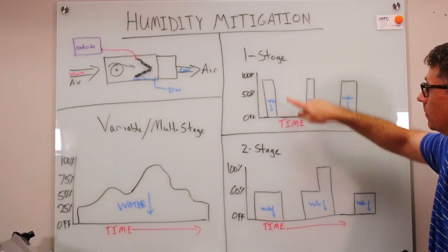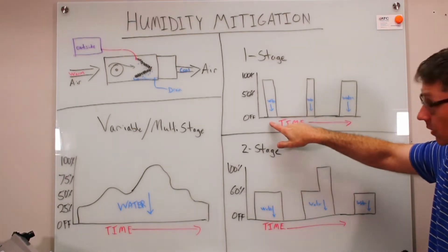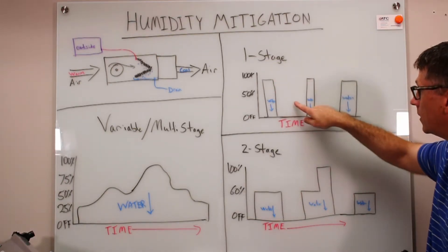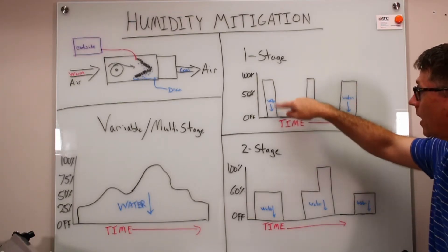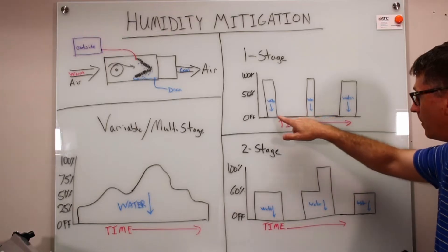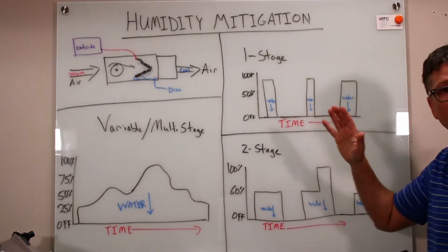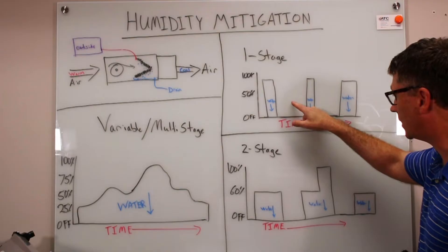Your single stage system, it comes on and it runs at 100% and then it's off. And then it comes on, it runs at 100% and then it's off. Every time it's on it's removing humidity. But you see these gaps? That's when nothing's happening. No humidity is being removed at those times.